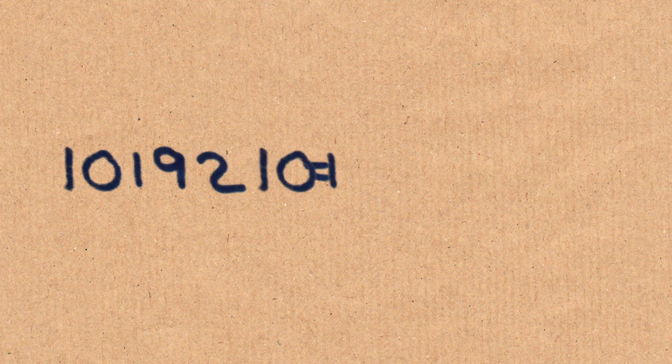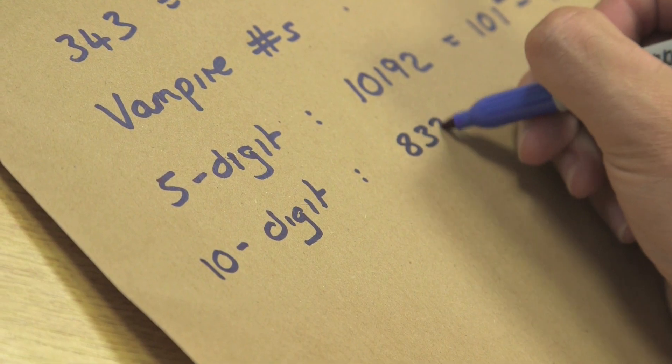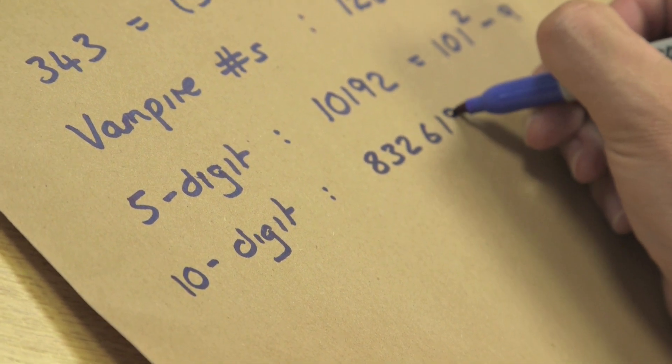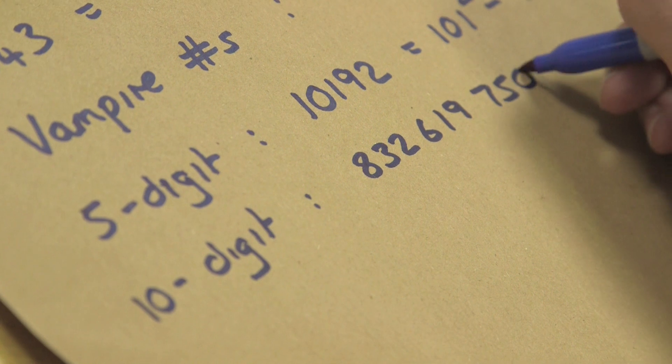10192, which is 101 to the power of 2 minus 9. And if I went to a 10-digit one: 8326197504...